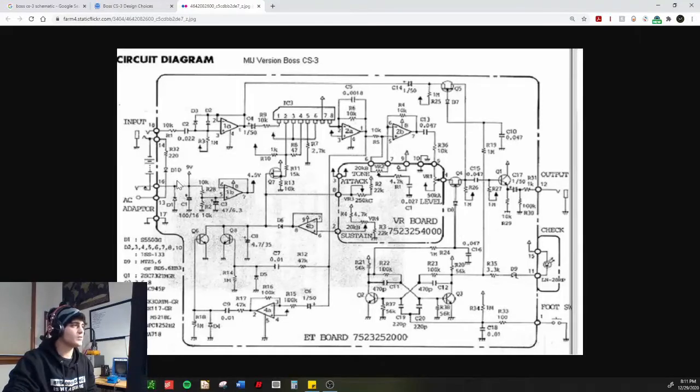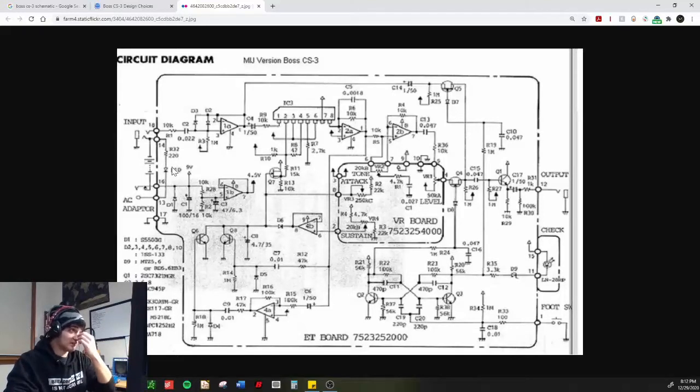Okay, the first thing we can note is this D10 and this R32. And one of the things that JHS does in the hi-fi mod is it converts it to the Boss PSA. They take these two components out and they just short this side of the R32 and this side of D10 with a short little jumper wire. But that's digressing.